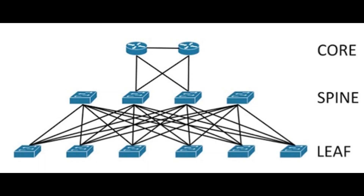This video is on spine and leaf architecture. Spine and leaf is a two-tier model where the spine is the backbone of the network, responsible for interconnecting all the leaf switches in a full mesh topology. Thanks to this mesh, every leaf is connected to every spine and the path is randomly chosen so that traffic load is evenly distributed among the top tier switches. This means that if one of the switches at the top fails, there would only be a slight degradation in performance throughout the data center.